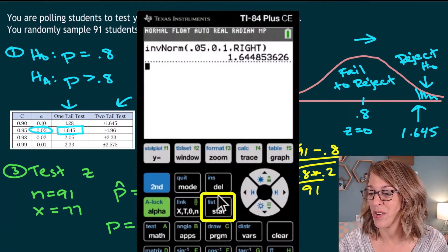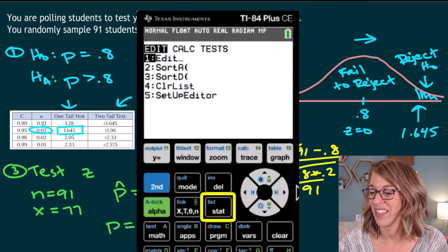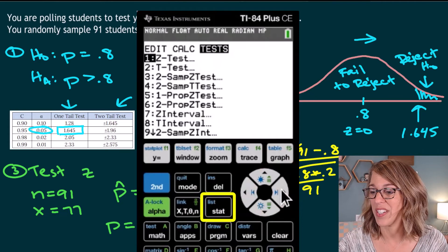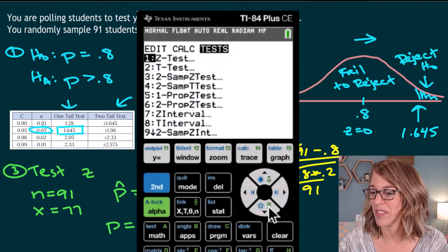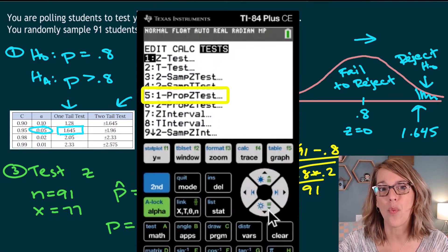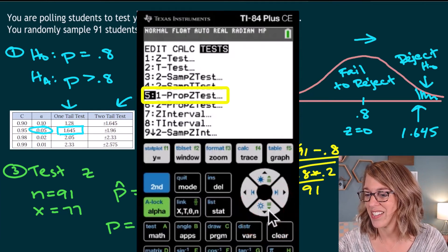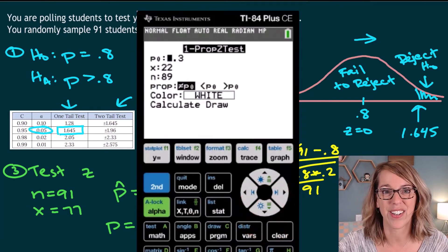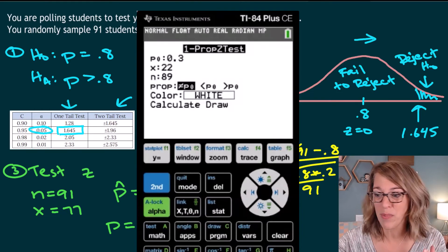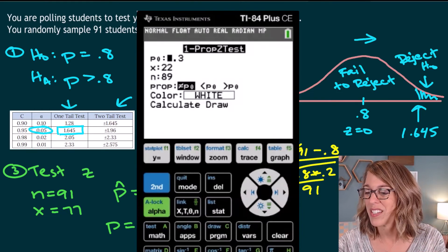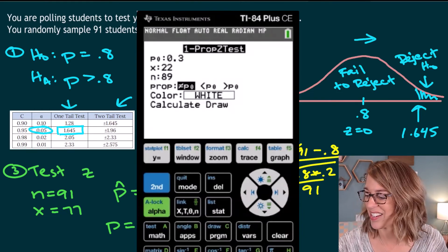So over in the calculator, I'm going to go to my stat menu, and then I'm going to arrow over to tests, and it brings up all of my possible tests. I'm looking for a one sample proportion test, and that is number five here on my calculator. I hit enter, and it's going to prompt me for these different values. P sub zero, that's my hypothesized proportion.